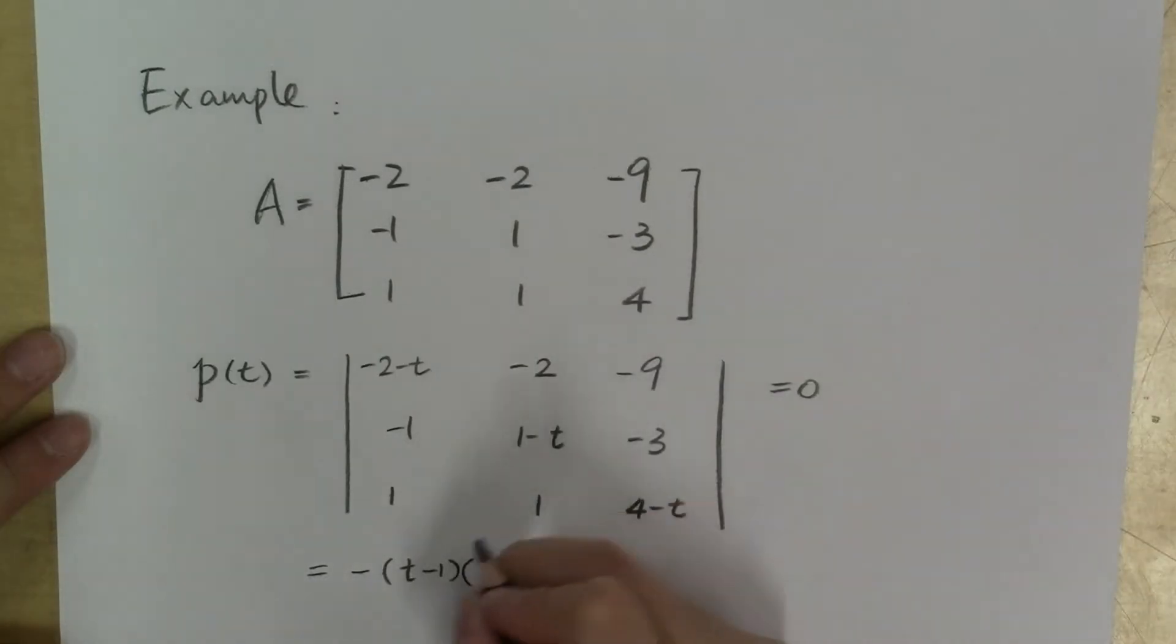After we factor the characteristic polynomial for this matrix, we find the characteristic equation is negative 1 times t minus 1 times t squared minus 2t plus 2 equal to 0.